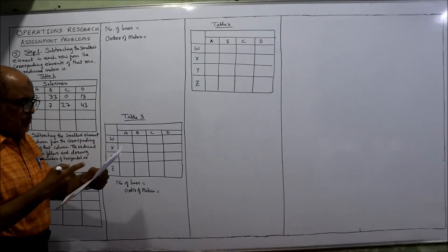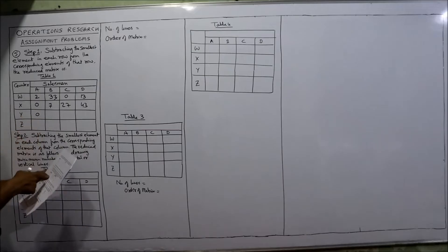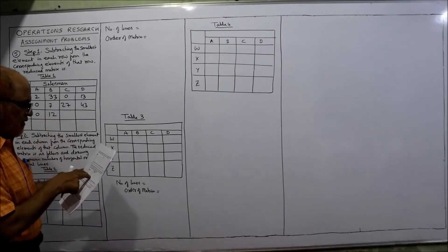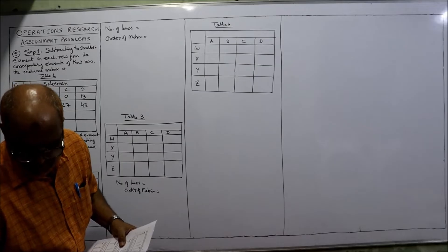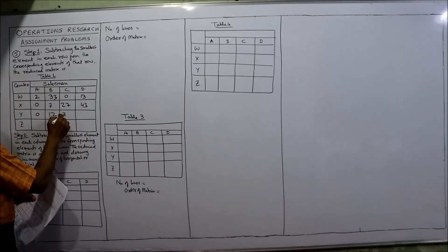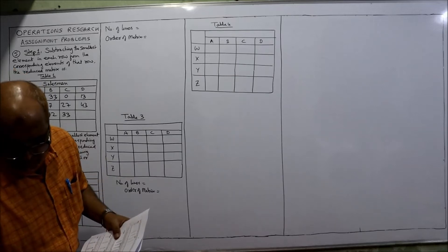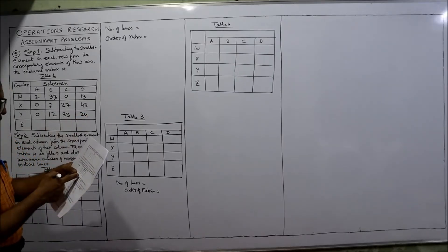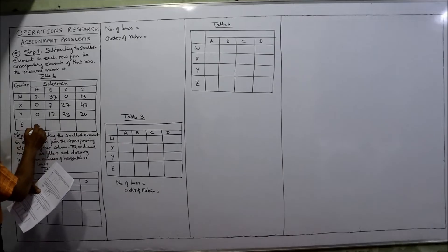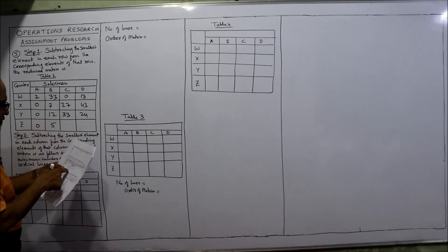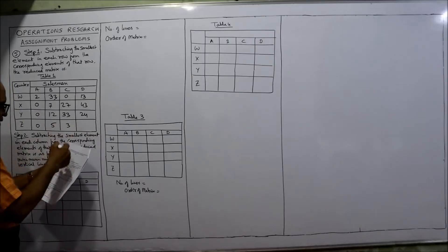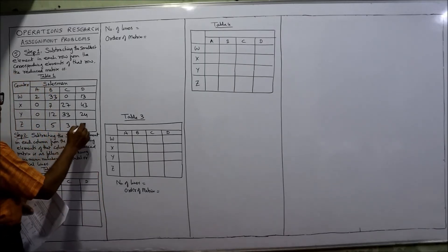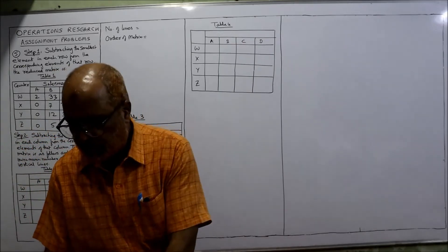Second row: 57, 39, 60, 51. The minimum is 27. So 27 minus 27 is 0, 39 minus 27 is 12, 60 minus 27 is 33, 51 minus 27 is 24. Third row completed. Last row: 45, 50, 48, 52. The minimum is 45. So 0, 50 minus 45 is 5, 48 minus 45 is 3, 52 minus 45 is 7. Row subtraction completed.